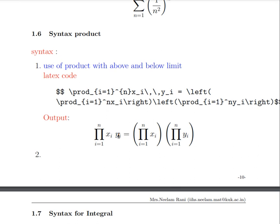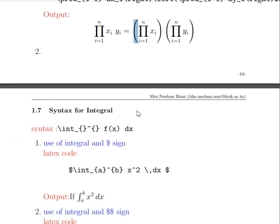For the product notation — used in formulas like Lagrange's formula with x1 y1 times x2 y2 — you use backslash prod. This generates the pi product symbol. Again you add a subscript using the underscore sign, for example i equals 1 to n. To write large brackets around expressions, use backslash left and backslash right with the appropriate bracket type.